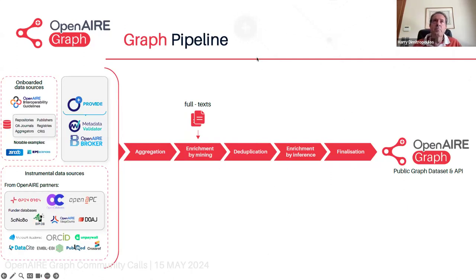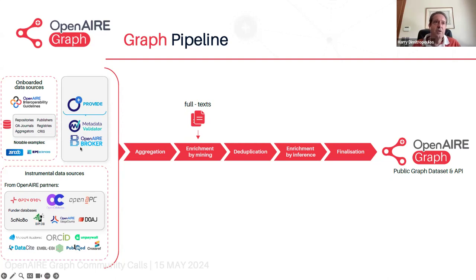Going back to the graph pipeline: on the left we have all the onboarded data sources — repositories, publishers, open access journals, registers, aggregators, and CRIS systems that feed the graph, registered through the Provide service, where metadata is checked by the metadata validator to comply with OpenAIRE guidelines. They can also be enriched by the OpenAIRE broker. The first stage was the aggregation stage, which has been covered before. Today we'll be covering the enrichment by mining, where we process the full text of publications to enhance the graph with new metadata.